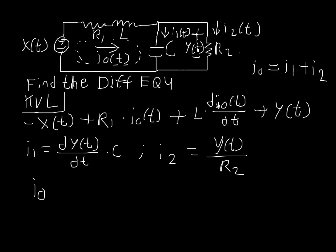We can say that i0 is equal to c times dy t dt plus y sub t over r2. Which really helps us out since now we have those in terms of knowns, either being r2, c, or our output voltage.